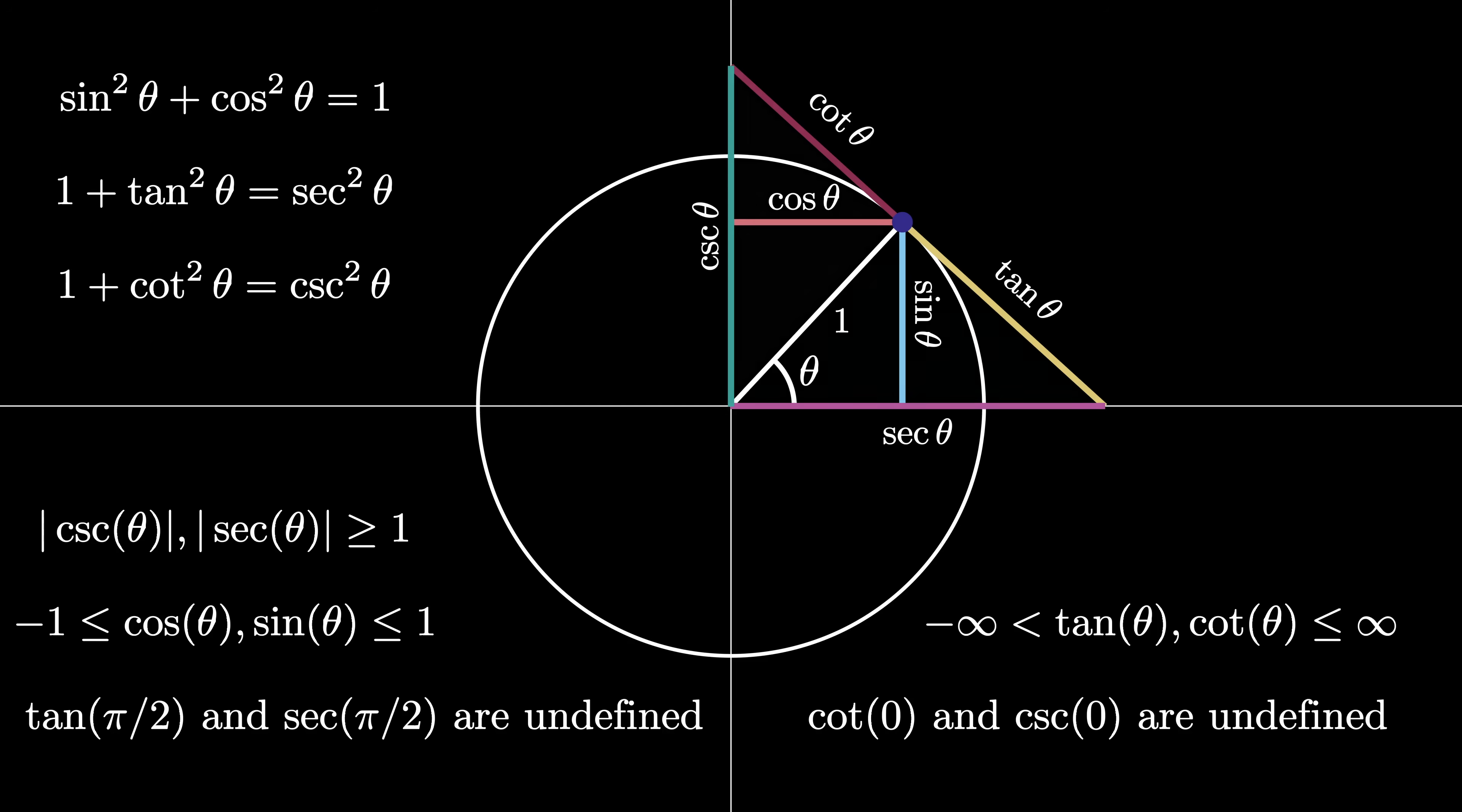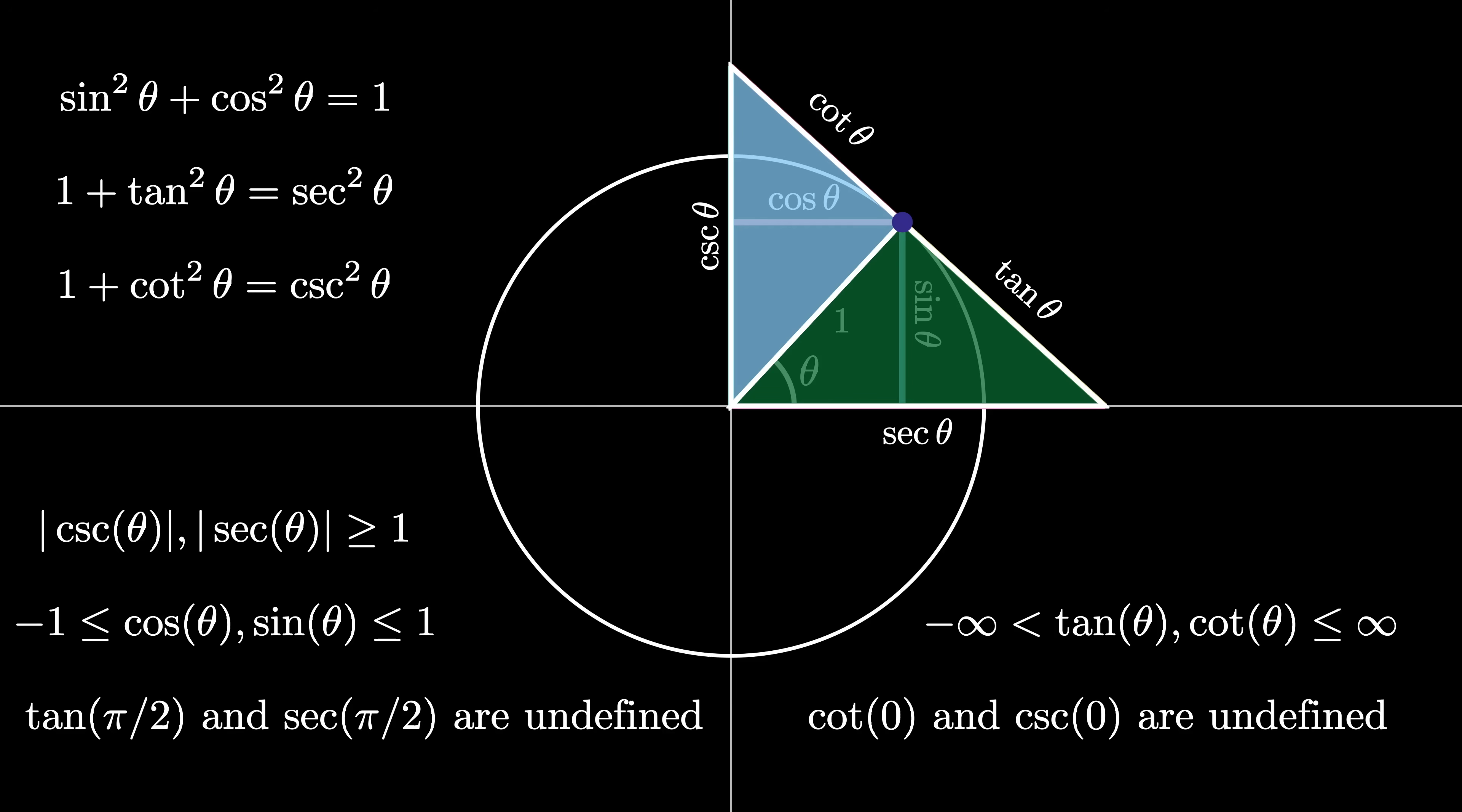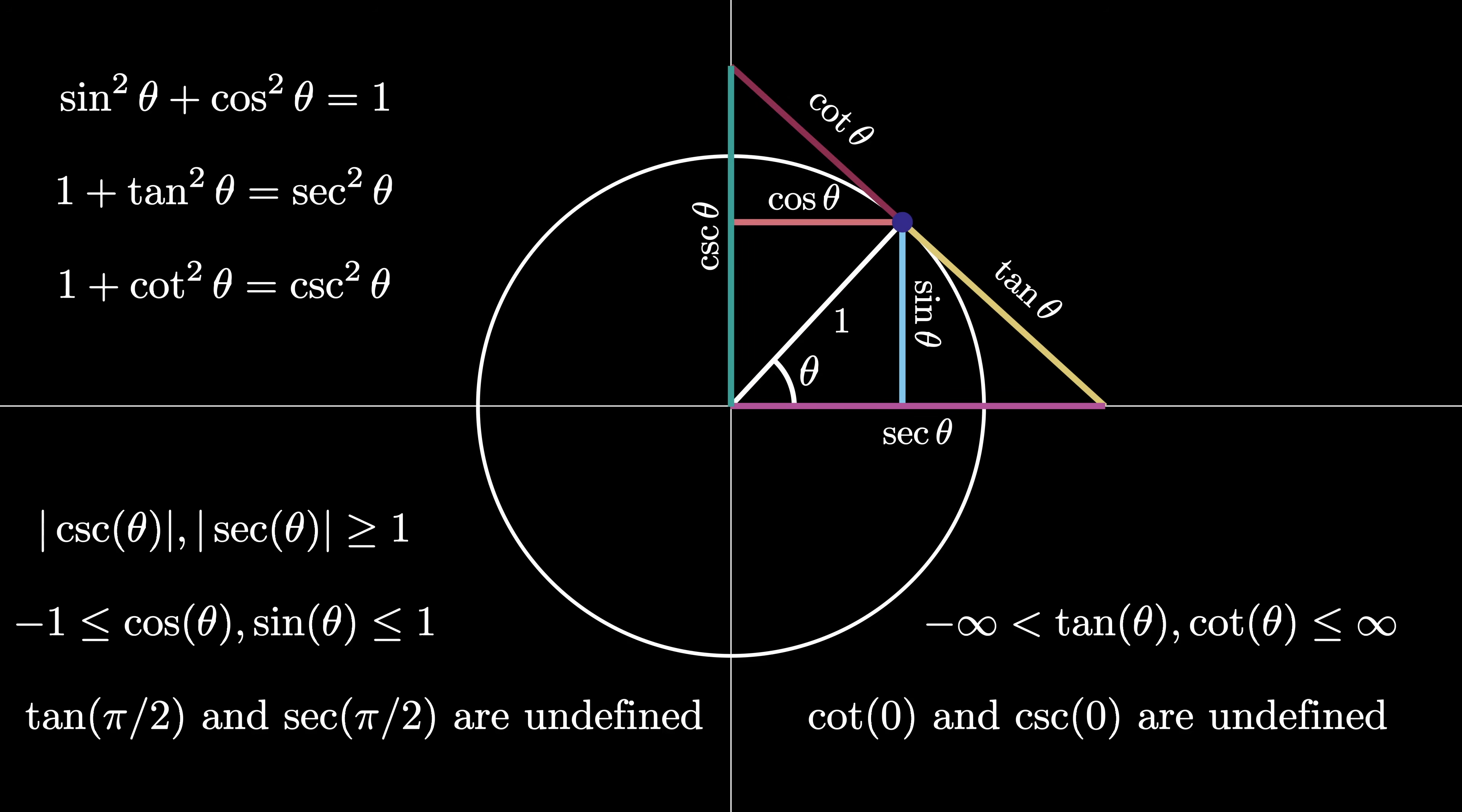Also, notice that these two triangles pictured here really contain the same information. It's just one contains the information about the complementary angle. Those values are simply the sine, secant, and tangent of the complementary angle. The prefix co attached to all those words stands for complementary.